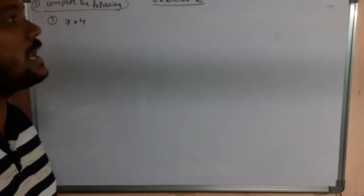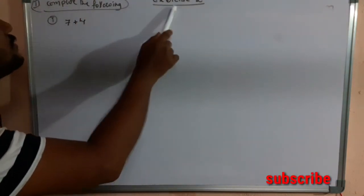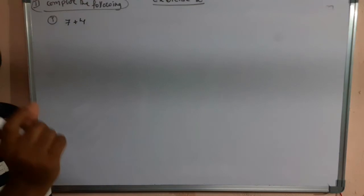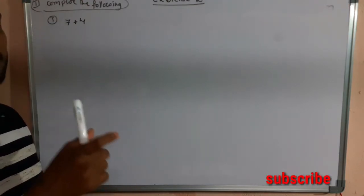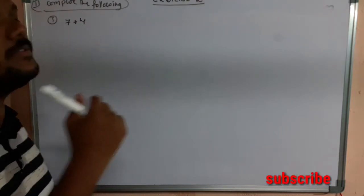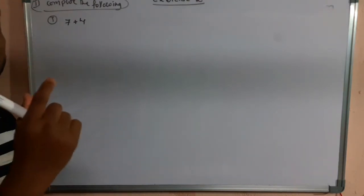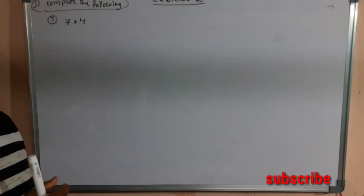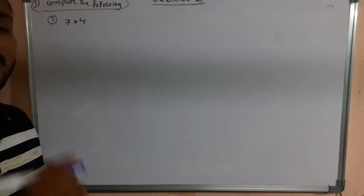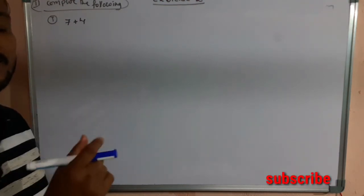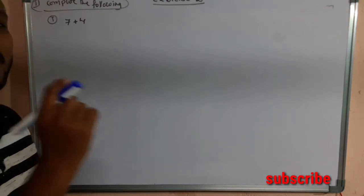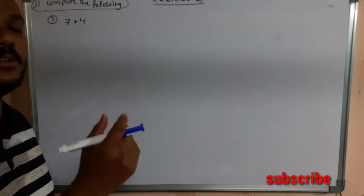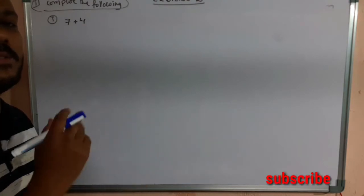Hi students, welcome to GSL Math Academy. Now we are going to discuss the second bit of Exercise 2. The question asks us to compute the following without using a number line — we need to find the sum of these integers. In the first bit, we found the sum using a number line. I already did another video on adding integers without a number line; if you haven't watched it, please do so first.